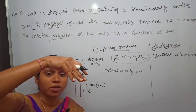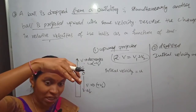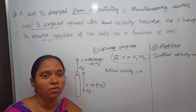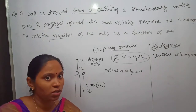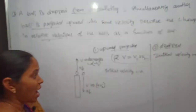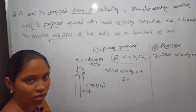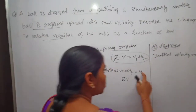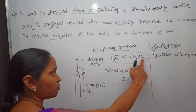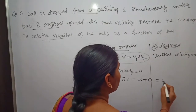When the dropped ball moves in the downward direction, the velocity gradually increases. So the initial velocity is zero. Coming to the relative velocities: we are relating both velocities. Relative velocity equals v1 plus v2, that is u plus 0, which equals u. So the initial relative velocity is u.